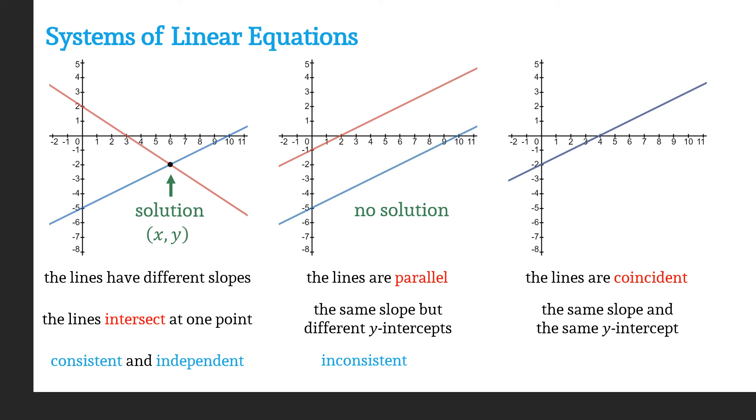So they are the same line. The way we classify this is consistent and dependent. Consistent because the system has at least one solution, and dependent because, in fact, it has an infinite number of solutions.